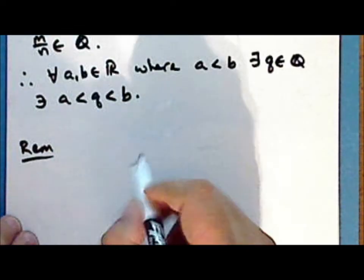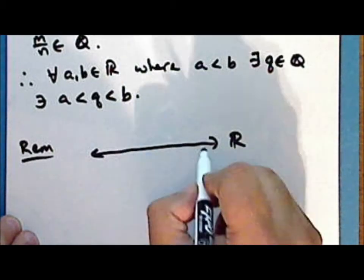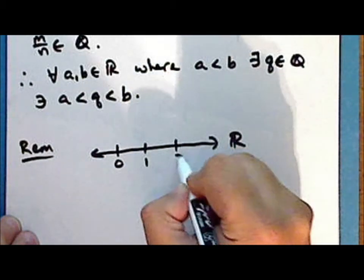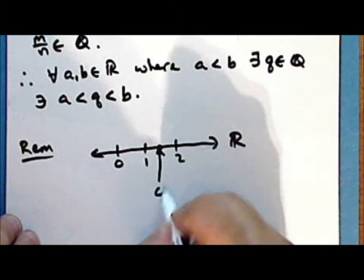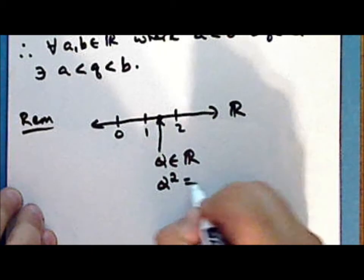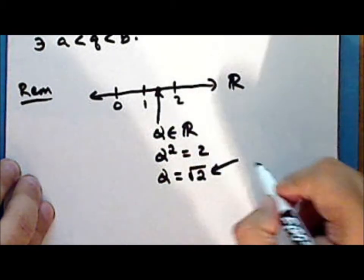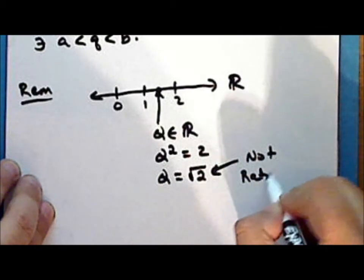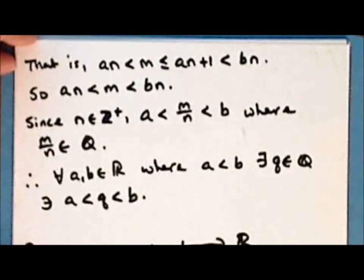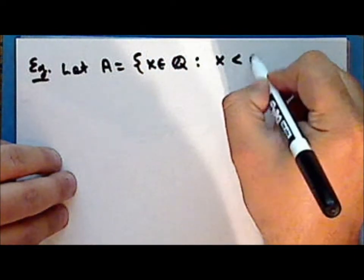Now recall from the previous lecture that we take as the model of the real numbers those numbers which can be represented as points on the Euclidean line. We identified a point on this line that we call alpha, a real number whose square is equal to 2. So we can represent this number as the square root of 2.